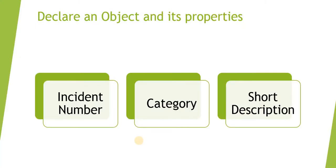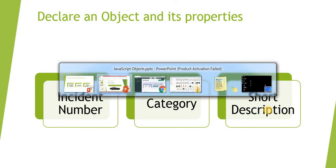Now we will see how we can declare an object and its properties. We will take an example in ServiceNow where I will declare an object and create three properties: incident number, category, and short description. Let's quickly jump to ServiceNow.